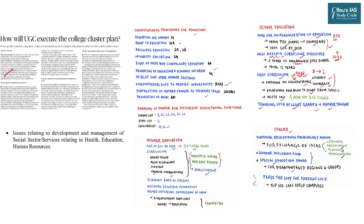The first article taken for discussion has appeared on the FAQ page: how will UGC execute the college cluster plan, and what are the National Education Policy recommendations for higher education institutions? UGC has issued new guidelines for transforming colleges and universities into multidisciplinary institutions, prescribing three approaches including clusters of institutions located in proximity to collaborate on innovative programs in offline, online, or distance learning mode. From the GS Paper 2 syllabus, issues relating to development and management of social sector services — health, education, and human resources — make this a good opportunity to revisit NEP's important recommendations.